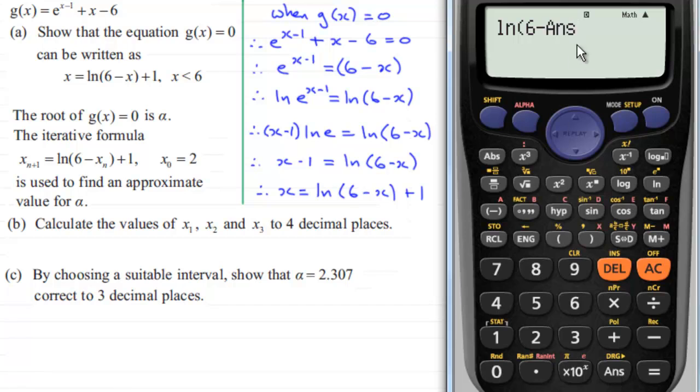So it remembers this as the 2 that we typed in just earlier. And then close the bracket and then plus 1. So when we press equals now, we get x₁. So x₁, when we give it to four decimal places, is going to be 2.3863.